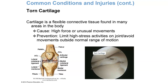Torn cartilage involves the flexible connective tissue found in many areas of your body — your nose, ears, ribs, and knees. It's usually caused by high force or unusual movements. Prevention includes limiting high-stress activities on your joints, avoiding movements outside the normal range of motion, and making sure that warm-up and cool-down prepare and recover your body properly. Definitely condition your body before putting large amounts of stress on it.